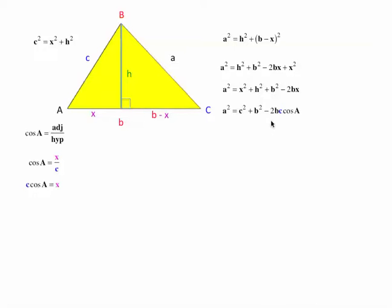That's pretty much the equation — I'm just going to organize it and put the B first. So A squared is equal to B squared plus C squared minus 2 times B times C times cosine of A. And that's the cosine law.